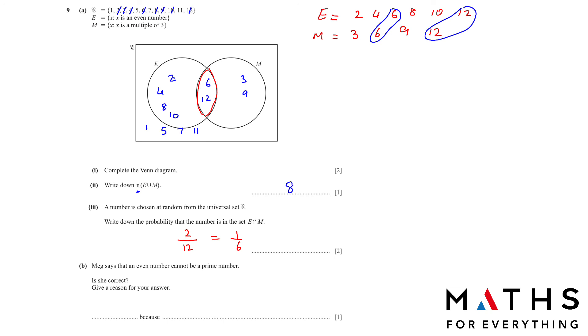Part B, Meg says that an even number cannot be a prime number. Is she correct? Give a reason for your answer. No, she is not correct. Because 2 is an even number that is also a prime number. So that is our answer. This brings us to the end of this video. Thank you for watching. And remember to subscribe and share with your friends.